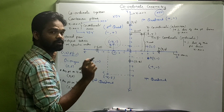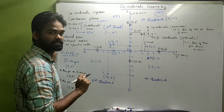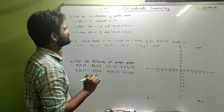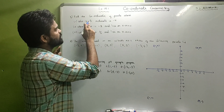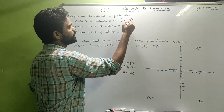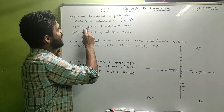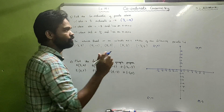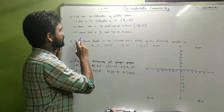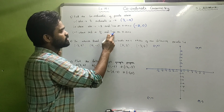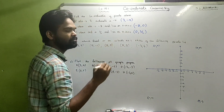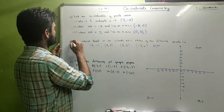Now let's look at Exercise 19.1. Find the coordinates of the point whose abscissa is 3 and ordinate is minus 4 - that gives (3, −4). The point whose abscissa is minus 2 and lies on the x-axis: since it lies on the x-axis, the ordinate is zero, giving (−2, 0). The point whose ordinate is 3/2 and lies on the y-axis: the abscissa is zero, giving (0, 3/2).